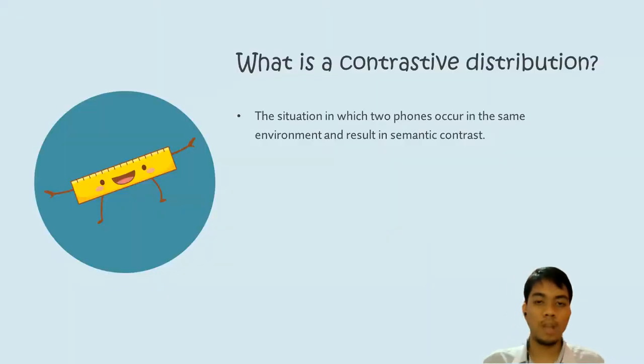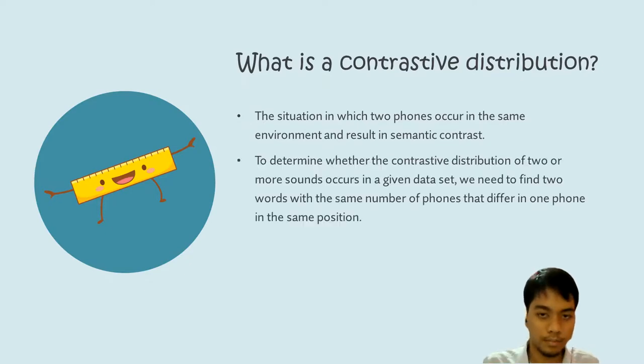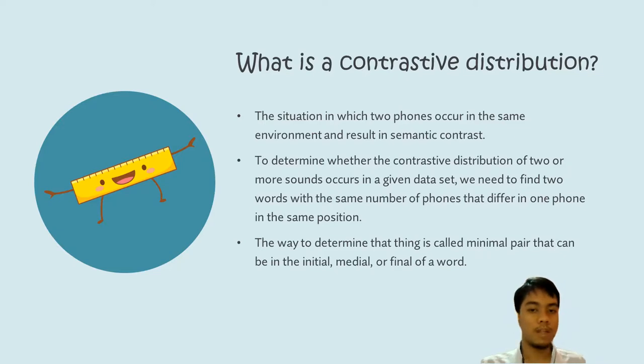So let's move to another thing. What is a contrastive distribution? This is the situation in which two phones occur in the same environment and result in semantic contrast. To determine whether the contrastive distribution of two or more sounds occur in a given dataset, we need to find two words with the same number of phones that differ in one phone in the same position. The way to determine that thing is called minimal pair that can be initial, medial, or final of a word.